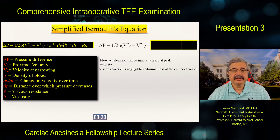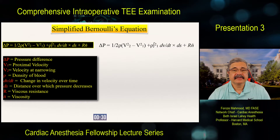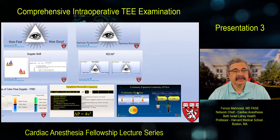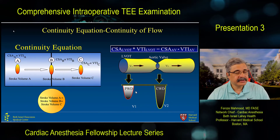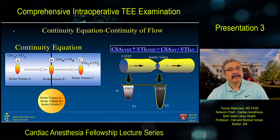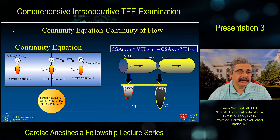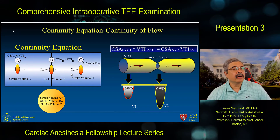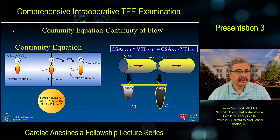The continuity equation is based on the principle that in the absence of a shunt, flow between two contiguous points is equal. Flow is determined by cross-sectional area times the velocity time integral, and this can be used not only to calculate stroke volume and cardiac output, but also to estimate valve areas.